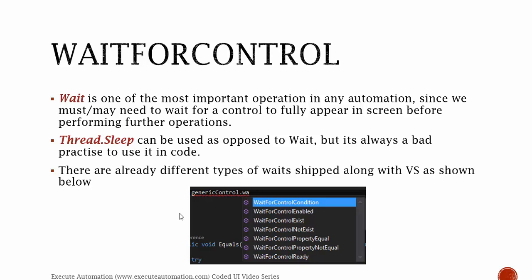Similarly, in Coded UI testing, there are different types of wait statements shipped with Visual Studio Coded UI testing — like WaitForControlConditions, WaitForControlEnabled, WaitForControlExist, WaitForControlNotExist, WaitForControlPropertyEquals, WaitForControlPropertyNotEquals, and WaitForControlReady. You don't have to reinvent the wheel by writing a lot of code to perform a wait operation. Those things are completely not required in Visual Studio. So let's flip to Visual Studio and see how things work.